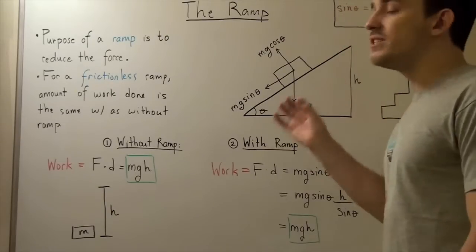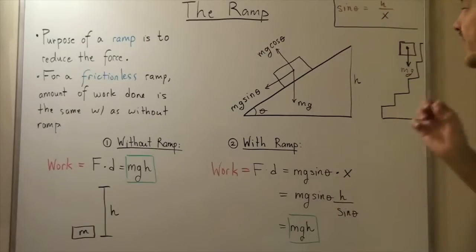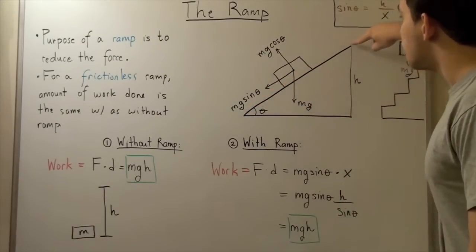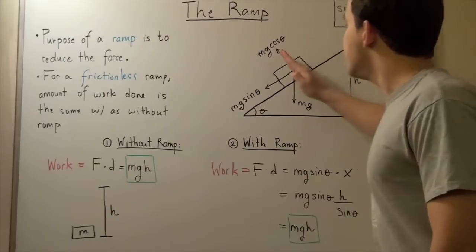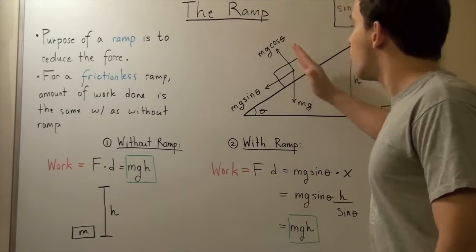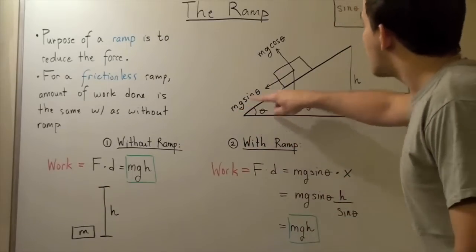Now notice that whenever we solve ramp problems or inclined plane problems, we consider this surface to be the x-axis. So this is our x-axis, and this is our y-axis, because the y-axis makes an angle of ninety degrees with our x-axis.